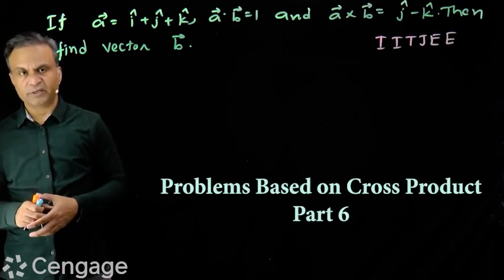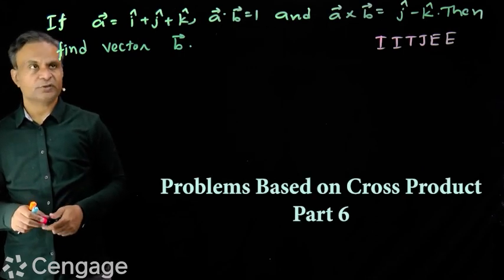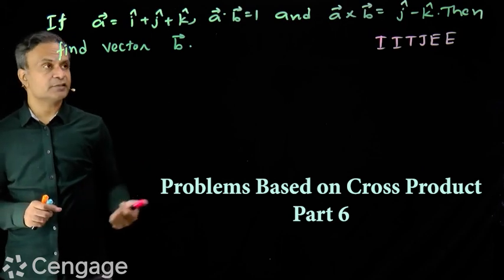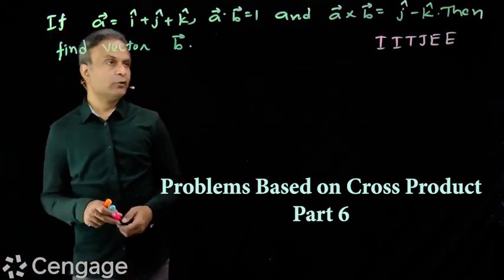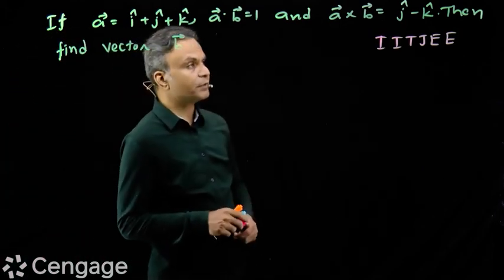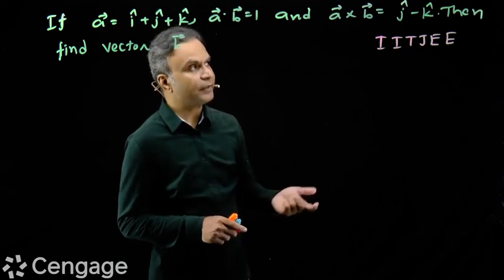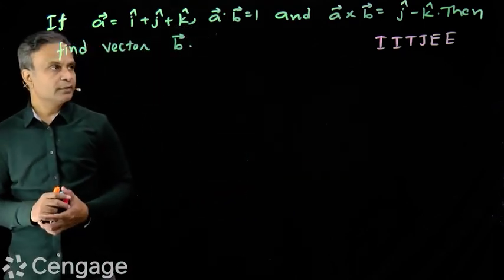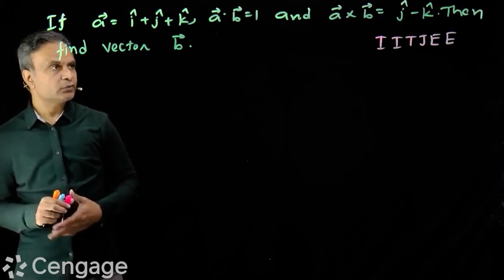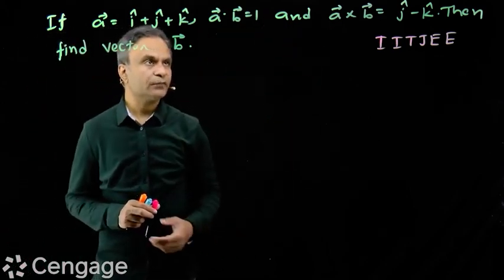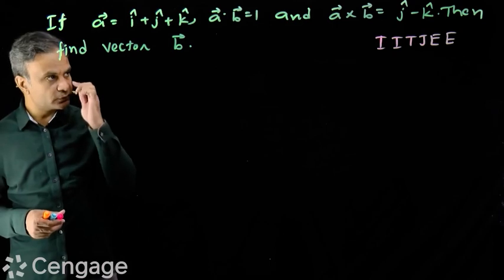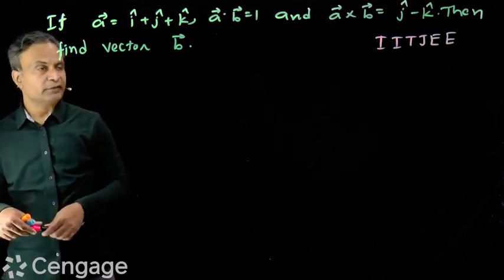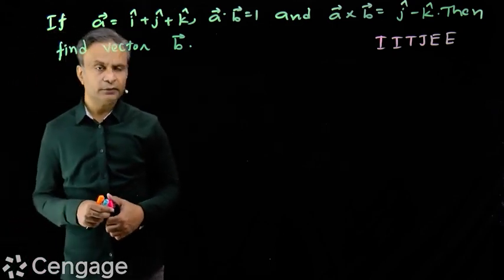We have a question: vector a is i plus j plus k, and vector b is such that a dot b equals 1 and a cross b equals j minus k. We need to find vector b. Vector b must satisfy both conditions: a dot b equals 1 and a cross b equals vector j minus k. Vector a is given and we have to find vector b.